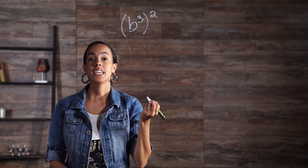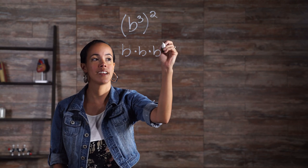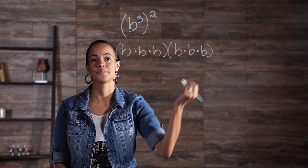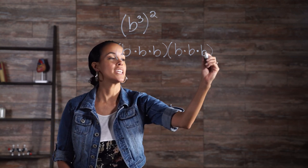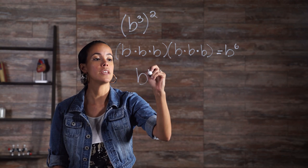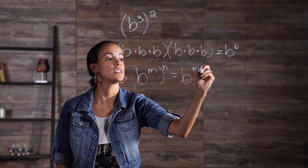The power of a power property allows us to raise a power to another exponent. Once again, expanding an expression makes understanding the rule a bit easier. Suppose the power b cubed is squared. In expanded form, it would look like this: b times b times b times b times b times b. Using the product of powers property or simply counting up the bases of b results in b to the sixth power. The general form of this property is b to the m raised to the n equals b to the m times n.